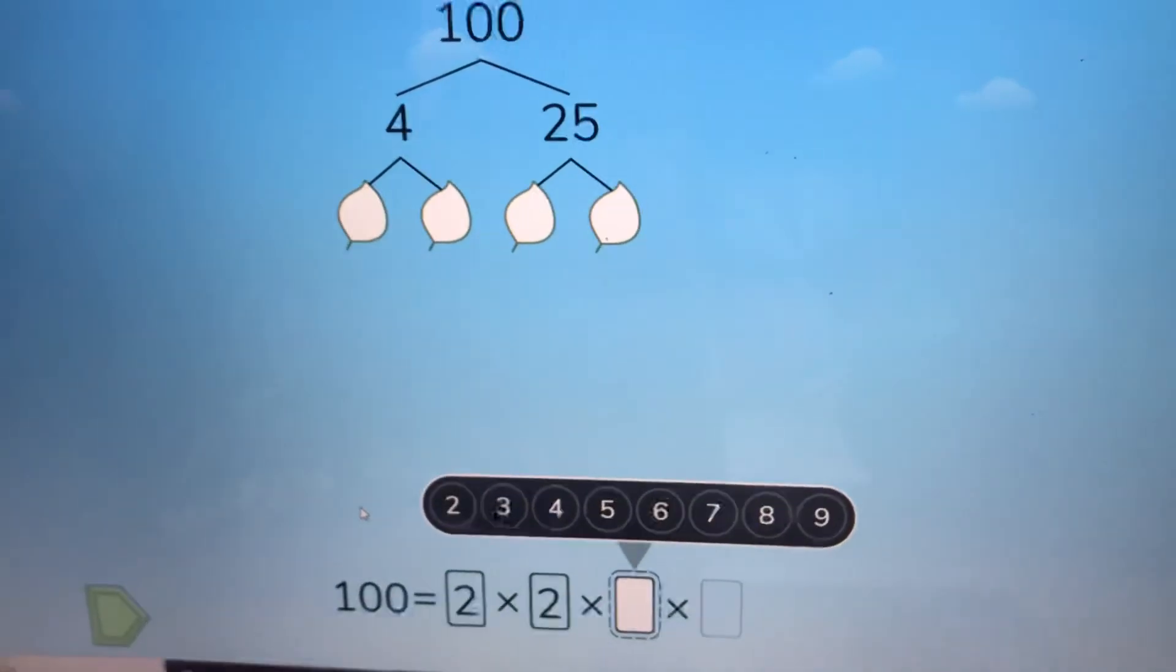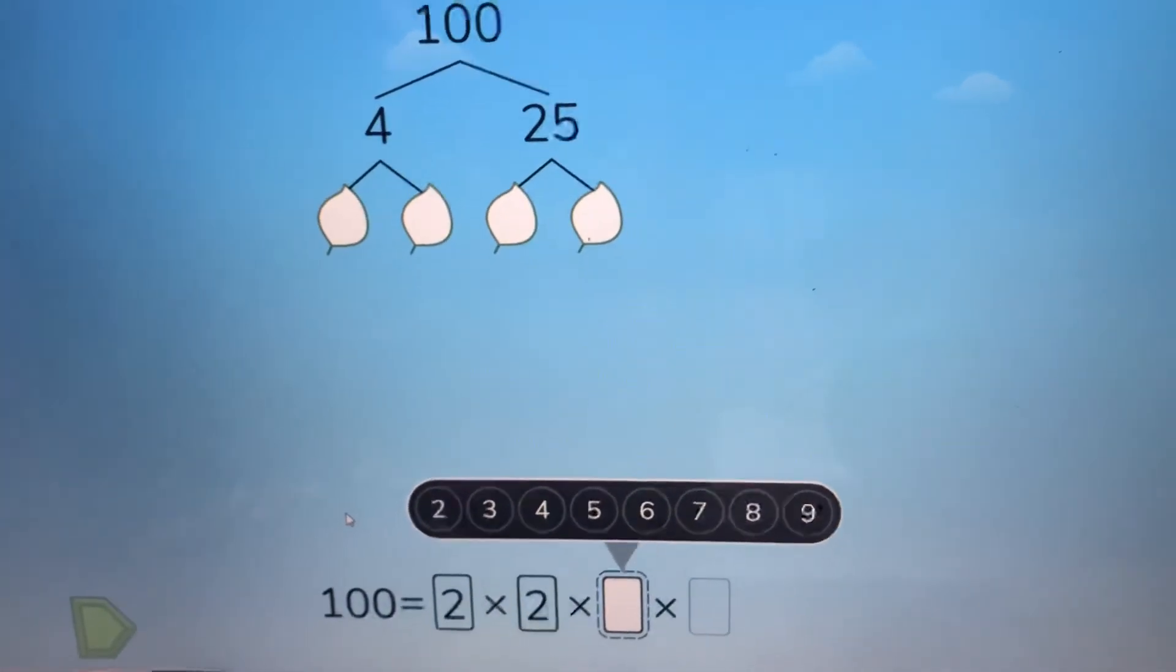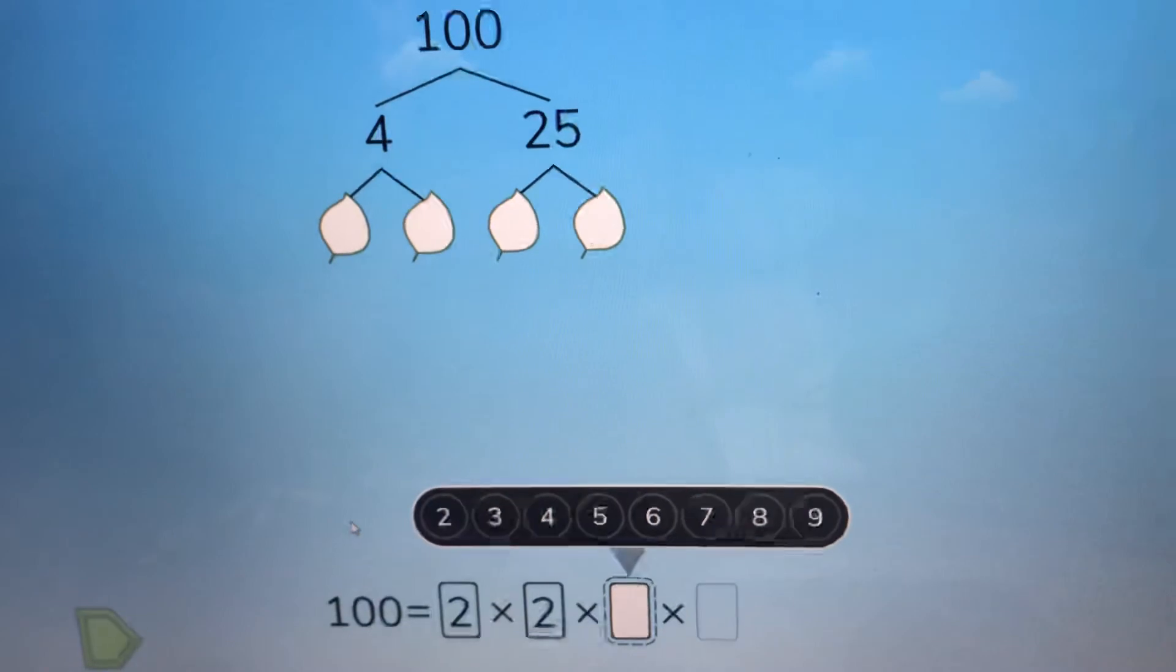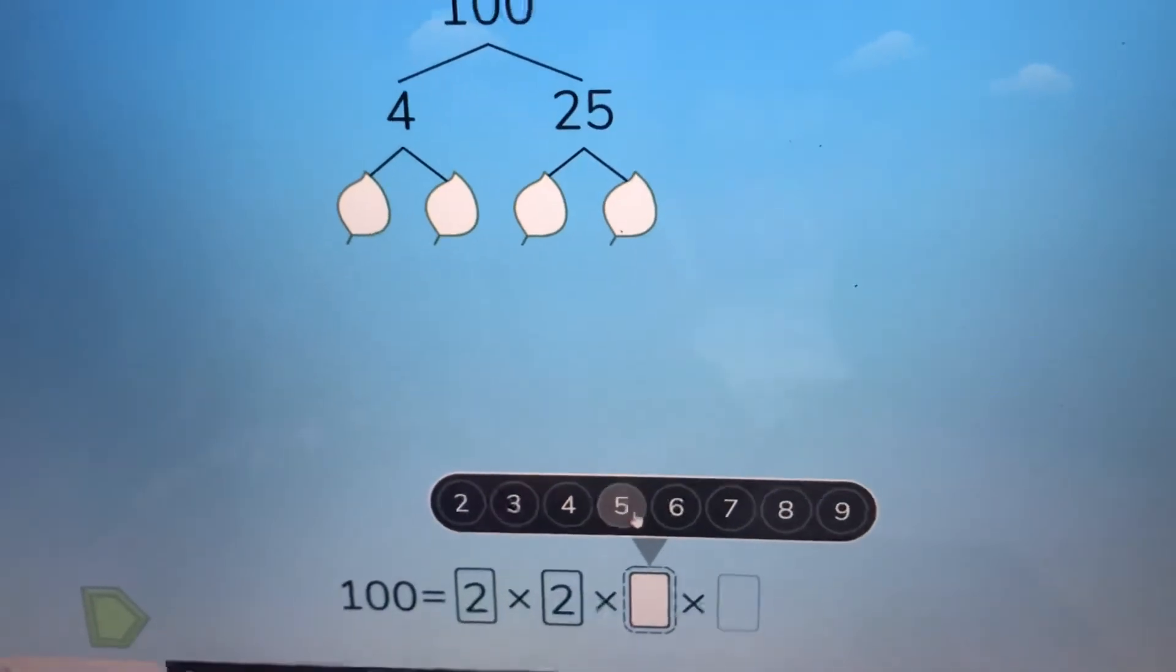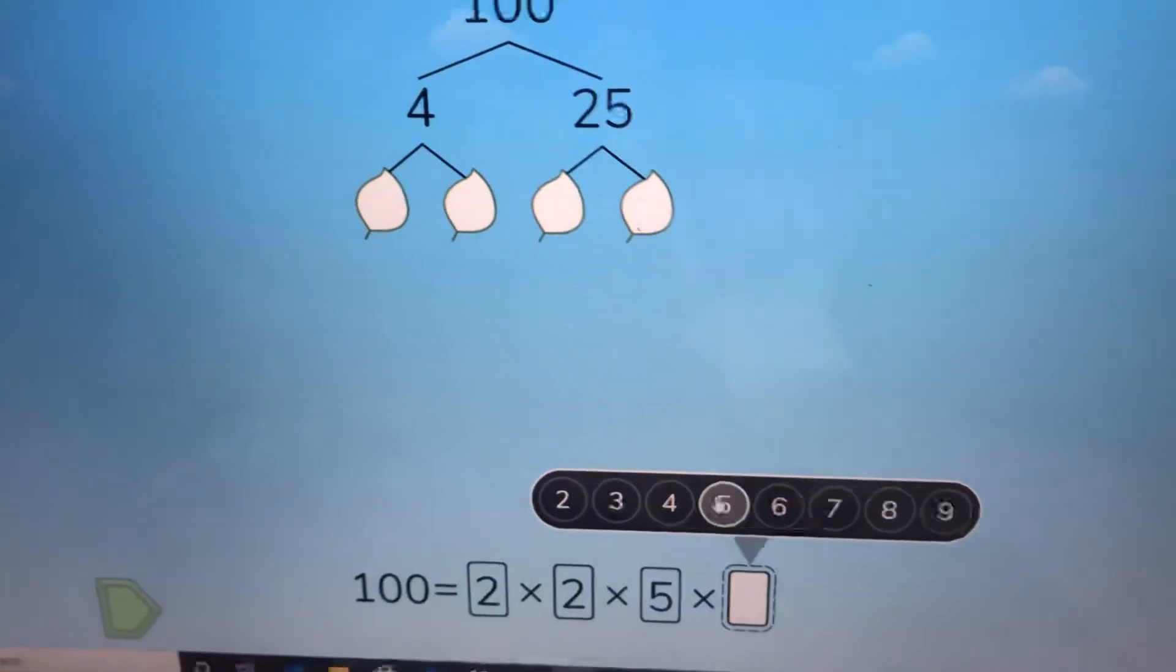And then there's this one, what times what equals 25? I already know this one, ready set go. It's five times five, so let's put the same thing, five right here, five right there. And that's all.